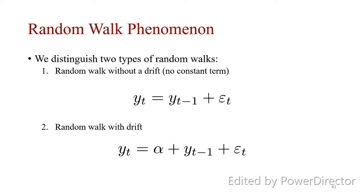We have random walk without a drift and random walk with drift. A random walk with drift is given by—this is without drift and this is when we have α. α is known as the drift. Without drift means α equals 0, with drift means α is not equal to 0.